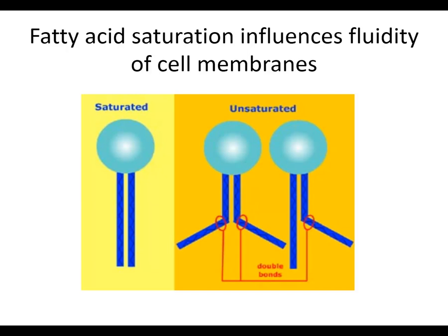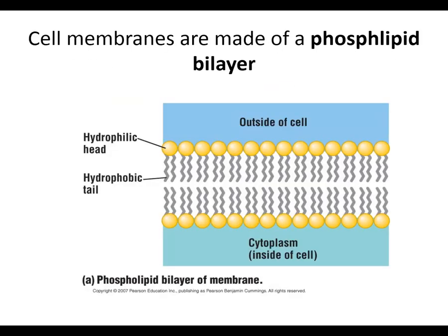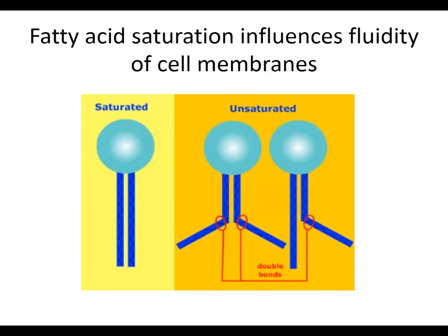Fatty acid saturation can influence how tightly these membranes hold together. We can see how tightly packed the phospholipids are, with their tails pointing inwards. Fatty acids can be saturated, unsaturated, or partly unsaturated. Fatty acid saturation influences fluidity of cell membranes. Which membranes would be the most fluid, and which would be the most rigid? Unsaturated would be fluid; saturated would be rigid. That's the right answer.